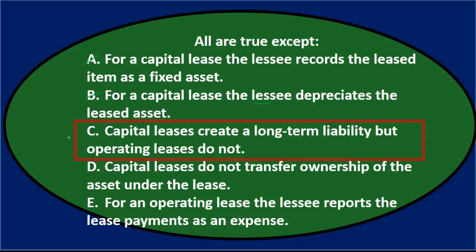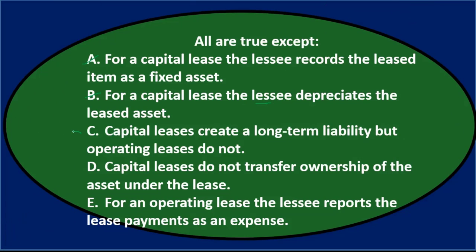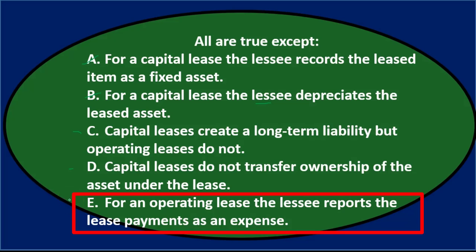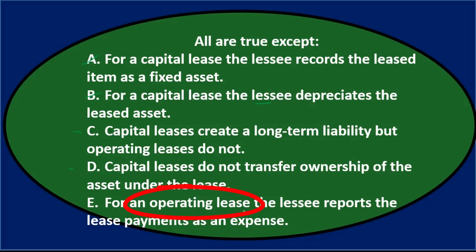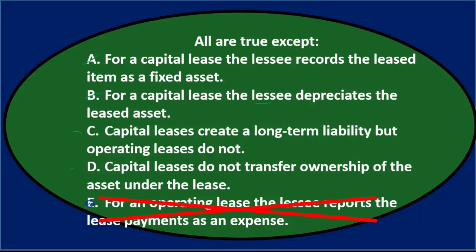Option C: capital leases create a long-term liability but operating leases do not — we're not sure yet, so we'll leave that. Option D: capital leases do not transfer ownership of the asset — since it's like a purchase, you'd expect ownership to transfer, so we'll keep that one too. Option E: for an operating lease the leasee reports lease payments as an expense — under a normal lease, payments are recorded as lease expense or rent expense, so E sounds true.